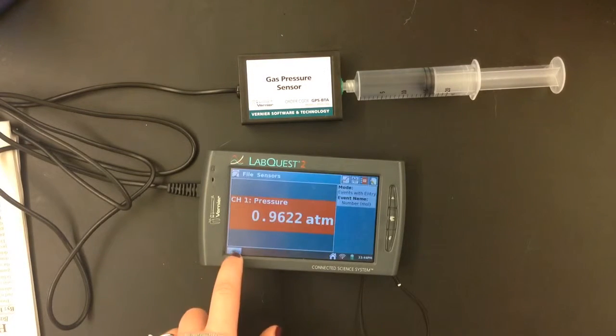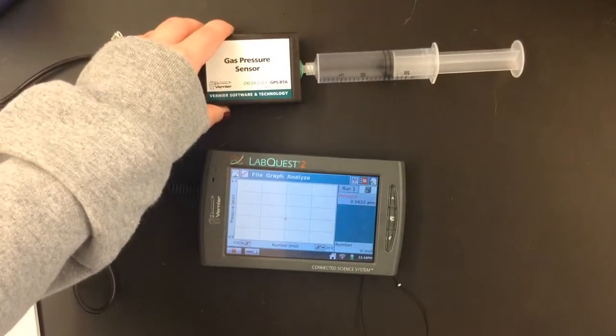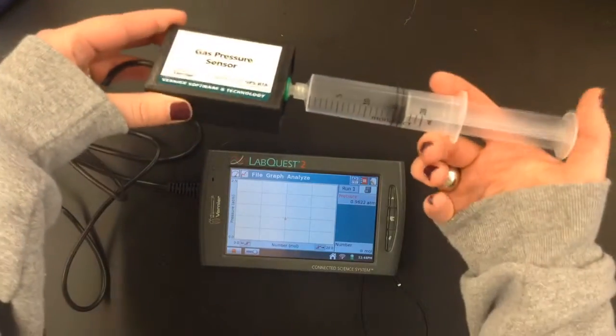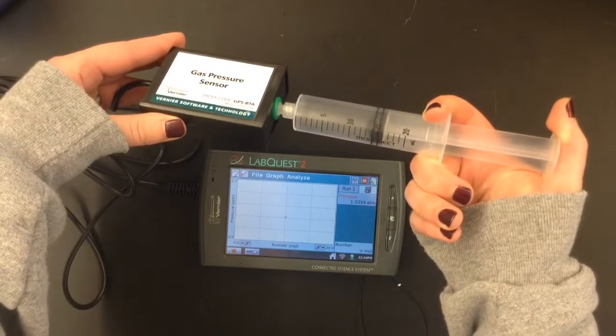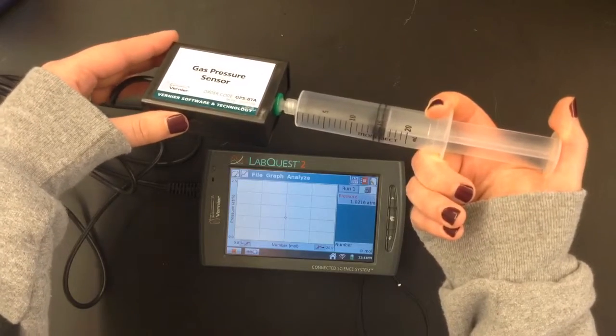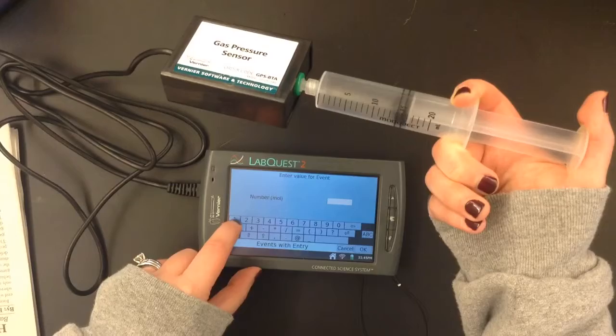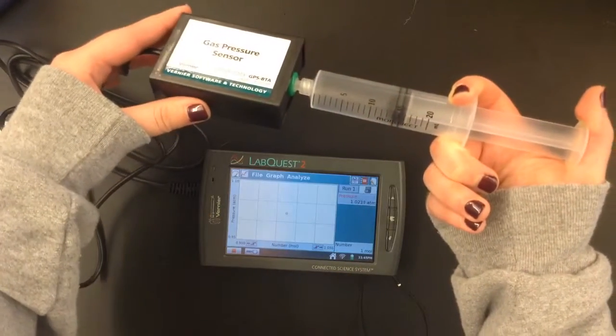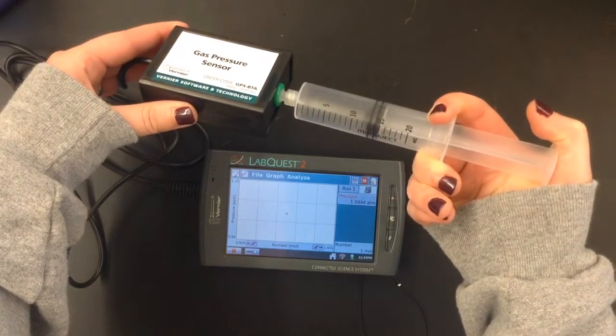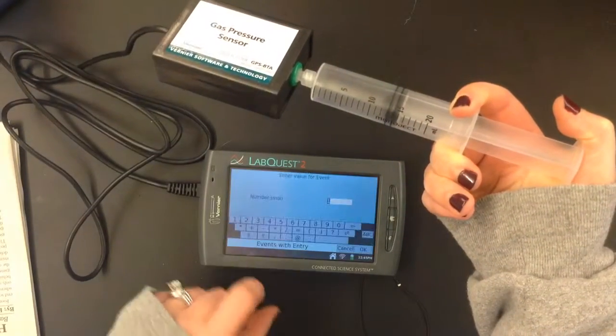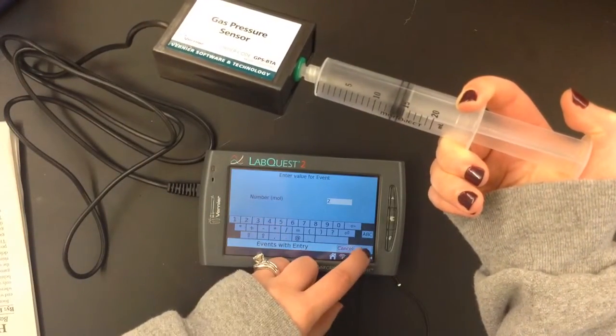So let's go ahead and hit play. Now I have this set at 15 and so this works a little bit differently. I'm going to push it in to 14. Now I didn't push in 14 milliliters. I went from 15 to 14. So I pushed in one mole of gas. I'm going to type in a one. Now I'm going to go from 14 and keep going. I'm going to go to 13. So now I've gone from 15 to 13, so that means I've added 2 moles of gas to the pressure sensor.